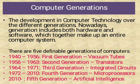The next topic is Computer Generation. The development in computer technology over the different generations — nowadays, generations include both hardware and software together, which make up the entire computer system. The computer generations define 5 generations: 1st Generation 1940–1956 vacuum tubes are used; 2nd Generation 1956–1963 transistors are used; 3rd Generation 1964–1971 integrated circuits are used; 4th Generation 1972–2010 microprocessors are used; 5th Generation 2010 onwards artificial intelligence is used.